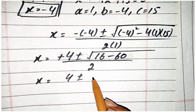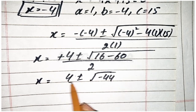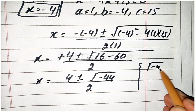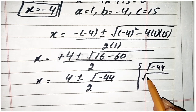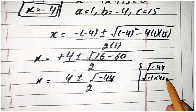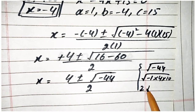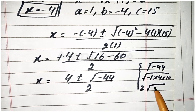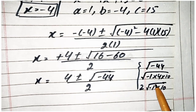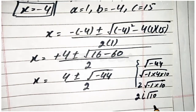x is equal to 4 plus minus square root of minus 44, over 2. Now to solve minus 44 we can write this as minus 1 multiplied by 4 multiplied by 10. The square root of 4 is 2, and the square root of minus 1 is iota, giving 2 iota square root of 10.